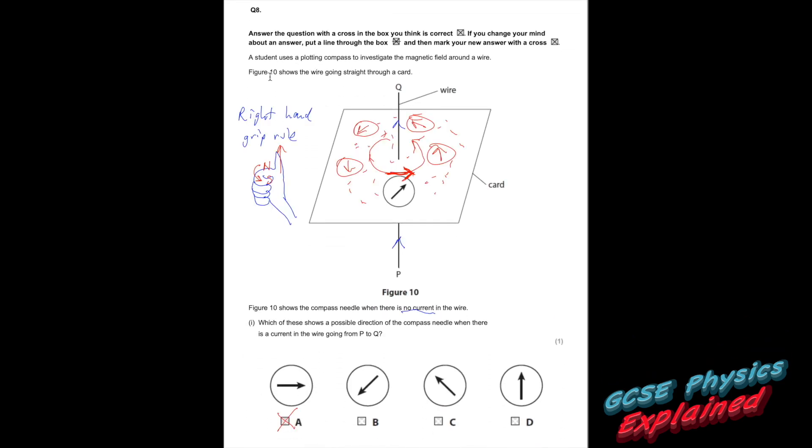Right, sorry about this. I recorded all the answers. But unfortunately, my screen recording device failed. So I've got all the answers on here, and I'm just going to quickly go over them. Number 8. A student uses a plot and compass to investigate the magnetic field around the wire. Figure 10 shows the wire going straight through a card. Figure 10 shows the compass needle when there is no current in the wire. Which of these shows a possible direction of the compass needle when there is a current in the wire going from P to Q?